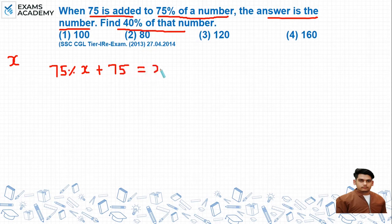If we solve this, the fraction for 75% is 3/4. So 3/4 of x plus 75 equals x. Now we'll solve this by taking it to the other side and subtracting. We get 75 equals 1/4 x.